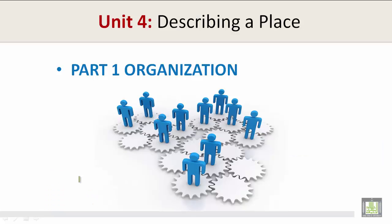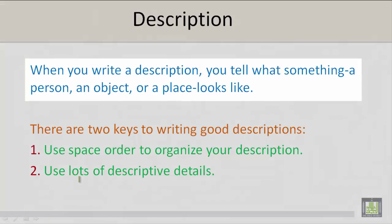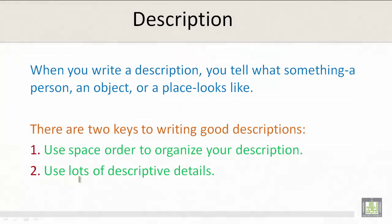Unit 4: Describing a Place, Part 1: Organization. When you write a description, you tell what something — a person, an object, or a place — looks like. There are two keys to writing good description.